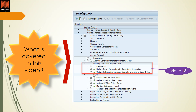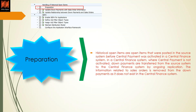This is in continuation with Central Payments — when we activate central payment, how do open items work? At any point when you activate central payments, you have open items like vendor invoices and customer invoices in the system. Historical open items are the open items that were posted in the source system before central payment was activated.